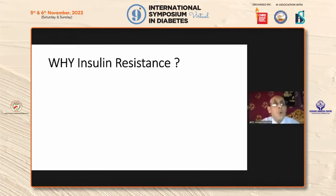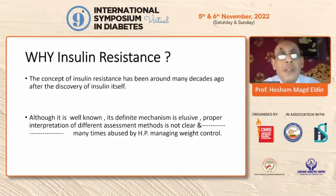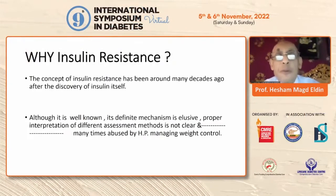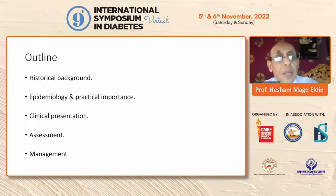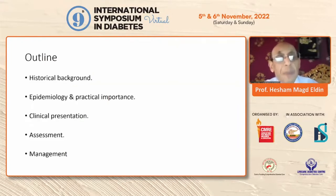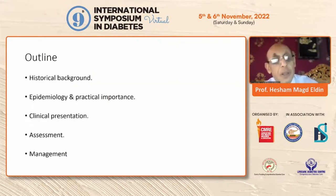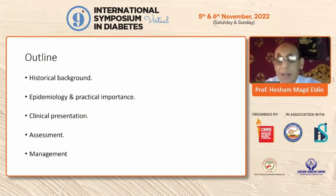I want to start by explaining why I chose insulin resistance, because the concept has been around for many years but it's still confusing. I want to go through the historical background, give a hint on the epidemiology, clinical presentation, and then how to assess and manage it.